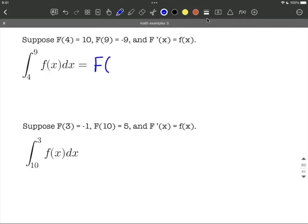What we'll do is we'll evaluate this first at the upper bound of integration, so the 9, the top number, then we subtract away the antiderivative at the lower bound of integration, so a 4.